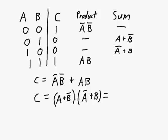So we'll use distribution to multiply these two terms together. So we've got A times not A, ORed with A times B, ORed with not B times not A, ORed with not B times B.